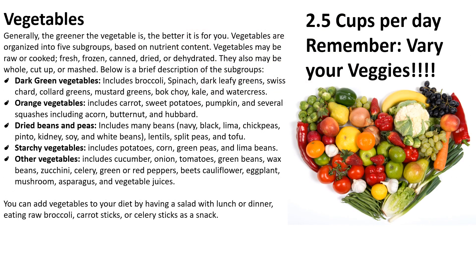The next food group is vegetables. Generally, the greener the vegetable is, the better it is for you. Vegetables are organized into five subgroups based on nutrient content. Vegetables may be raw or cooked, fresh, frozen, canned, dried, or dehydrated. They also may be whole, cut up, or mashed. Below is a brief description of the subgroups.